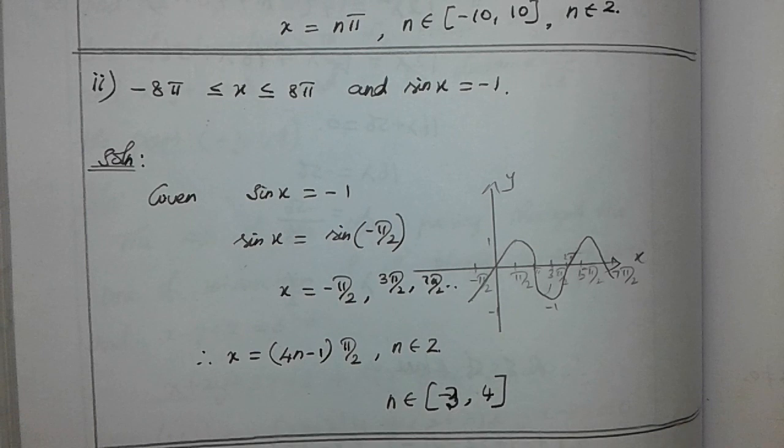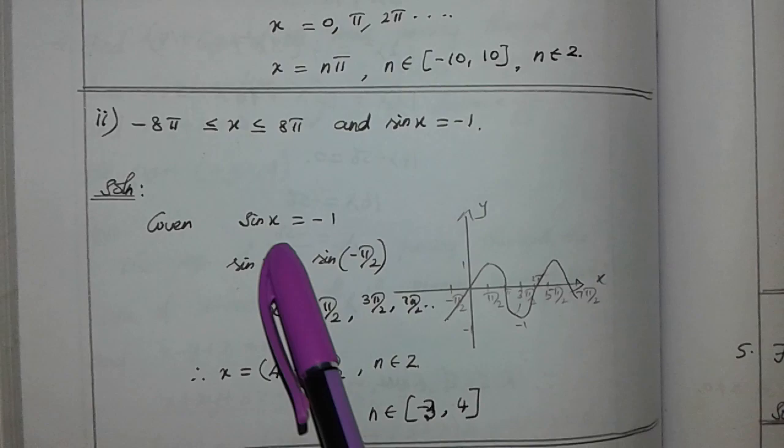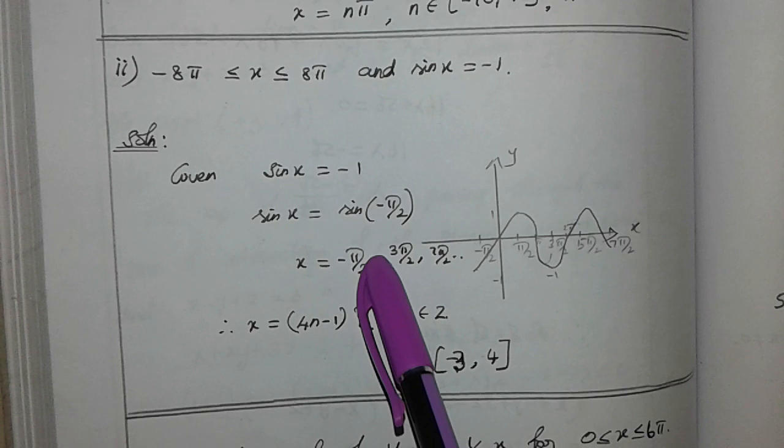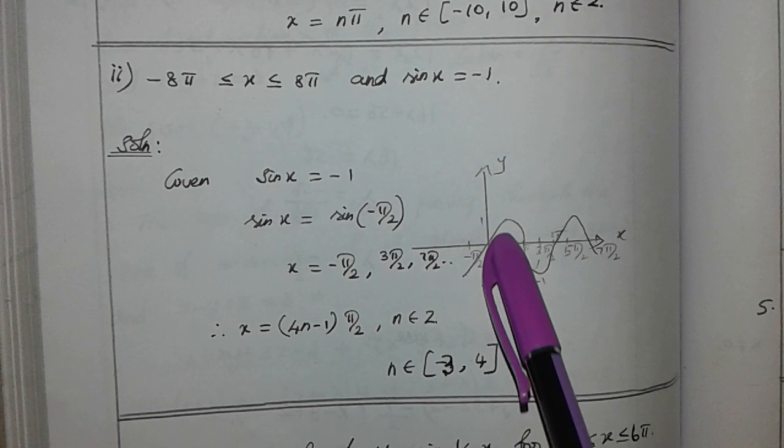Sin x is equal to minus sin. x is equal to minus π by 2. Minus π by 2, we would add 2π to get 3π by 2.